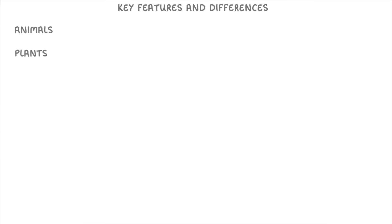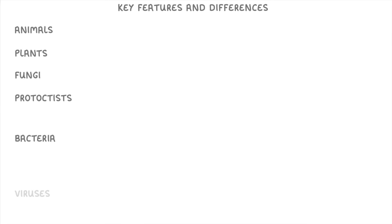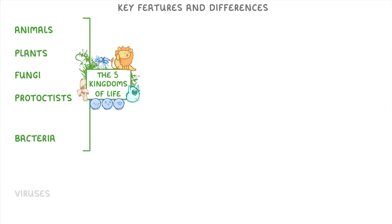In today's video, we're going to take a look at the key features and differences between animals, plants, fungi, protoctists, bacteria, and viruses. The aim of this video is to give you an overview of what they all are, so don't worry about remembering everything — I just want you to understand what makes them all different. Excluding viruses, these five groups are the five kingdoms of life, so almost all living organisms will be in one of these five groups.